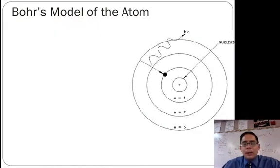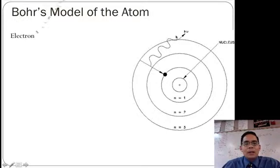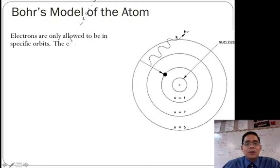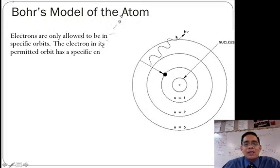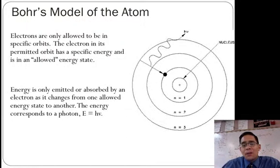So again, based on what we talked about, the energy released is going to be proportional to h times the frequency. And the electrons are only allowed to be in the specific orbits. The electron in its permitted orbit has a specific energy and is in allowed energy states. The energy is only emitted or absorbed by an electron as it changes from one allowed energy state to another. And the energy corresponds to the photon, E equals h times nu.